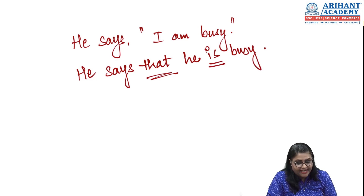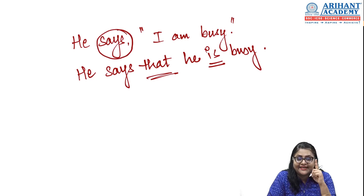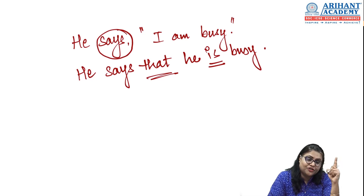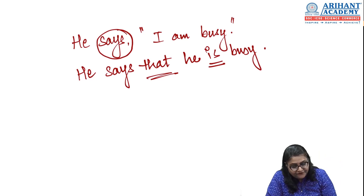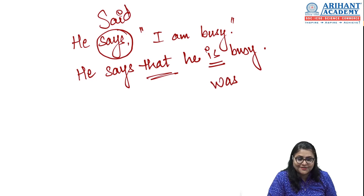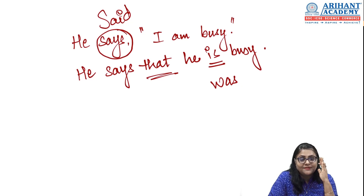When the reported verb is in present or future tense, we don't change the tense of the sentence. But if the reported verb were in past tense, for example 'said', then 'am busy' would change to 'was busy.' When the reported verb is in past, there are different rules for tense changes.